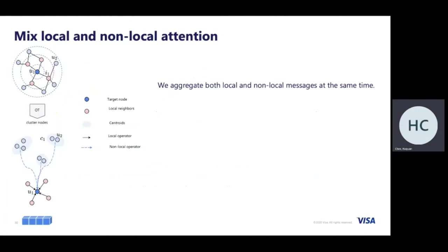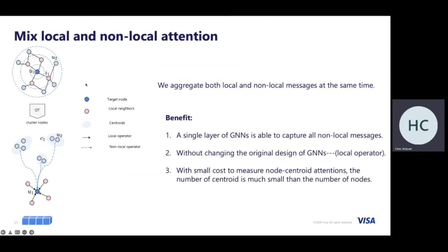Finally, we aggregate information from both local and non-local attention. To capture user embeddings, we use soft assignment pooling to cluster user nodes into different groups and aggregate information from these groups, while also keeping the original local aggregated information from neighbors. The benefit of our framework is that a single layer of GNN is able to capture all non-local messages. We do not need to change the original GNN design — it can adopt existing work like LightGCN — and the cost of centroid attention is very small since the number of centroids is much smaller than the number of nodes.